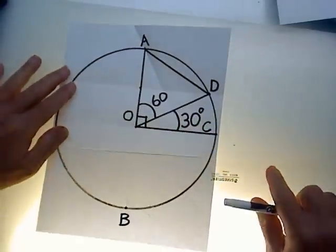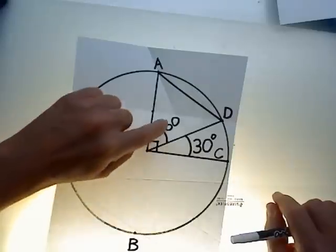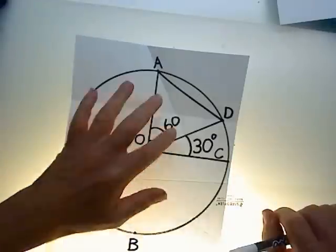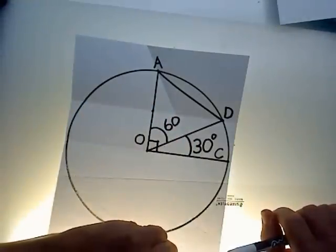There you have it, we've constructed two exact angles from points on a circle and by geometric logic. See you in the next tutorial.